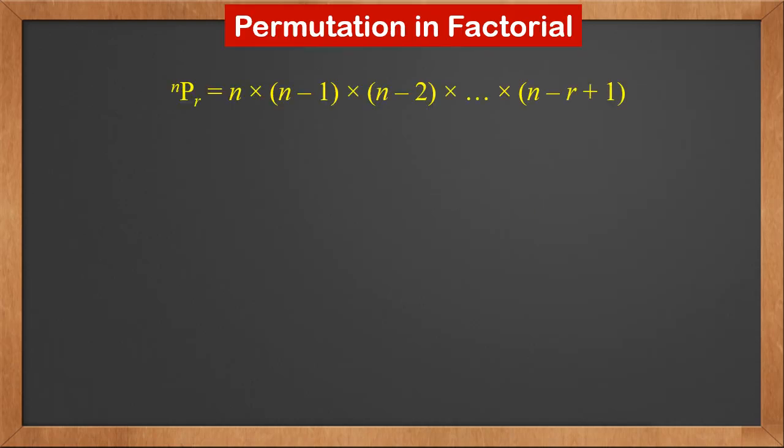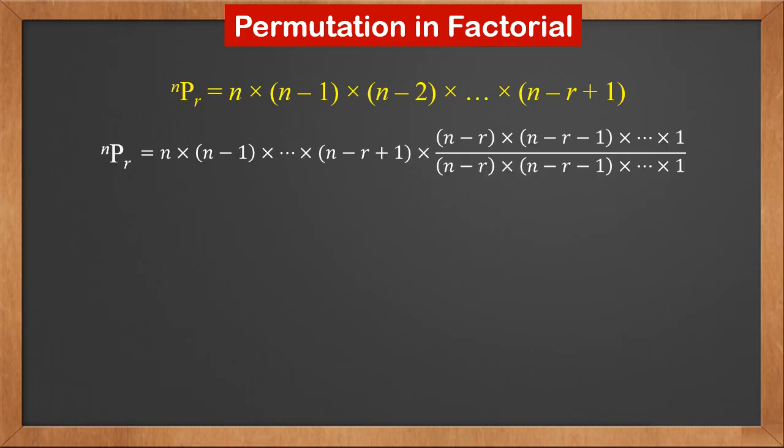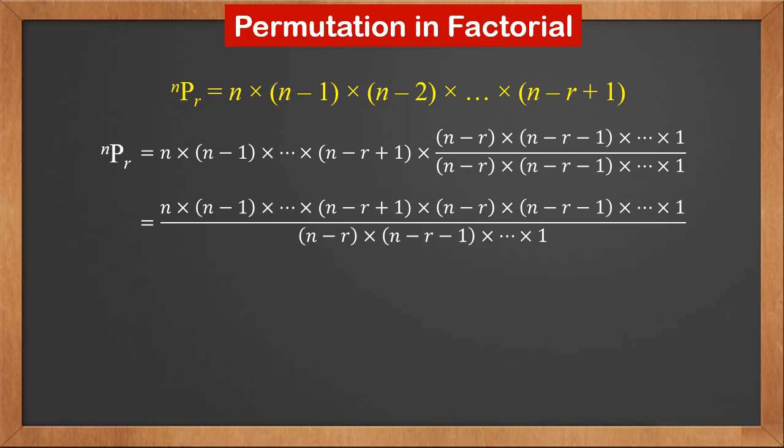We know NPR is multiply R numbers down from N. We can also write it in factorial form. Let's multiply this fraction with the existing expression. It is equal to 1, and both the numerator and the denominator are N minus R multiply all the way to 1. If we multiply everything onto the numerator, we can see that it's actually N factorial. And the denominator is N minus R factorial. Therefore, NPR is N factorial over N minus R factorial.